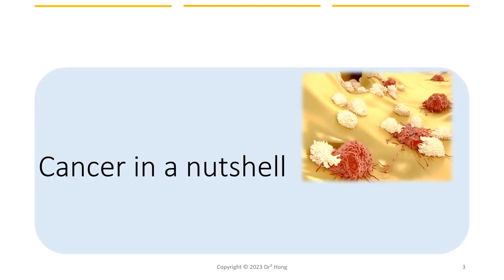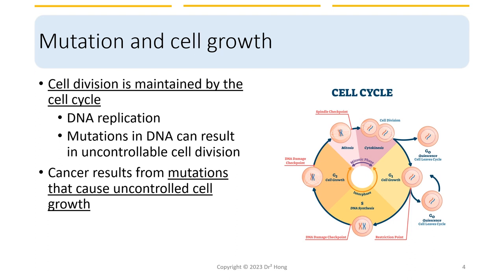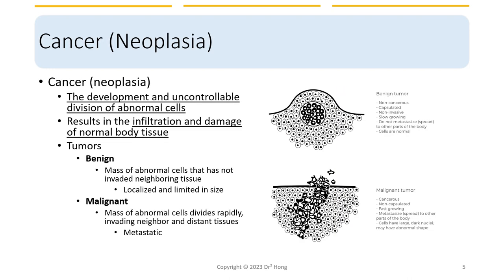Cancer talks can be very lengthy, so here I will just present a very abbreviated talk related to our topic. For cells that have the ability to divide and replicate, we refer to the process as cell division, maintained by the cell cycle. DNA replication needs to happen before the cell can split into two. Cancer is the result of mutations that cause uncontrolled cell growth. The more medical name for cancer is neoplasia, meaning the development and uncontrolled division of abnormal cells.